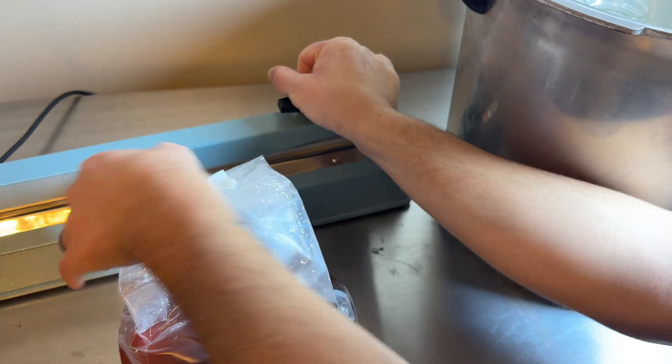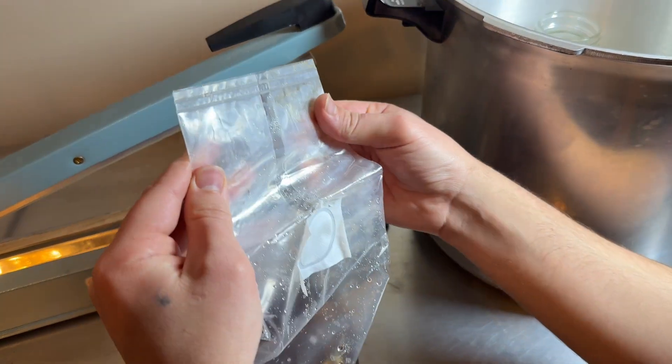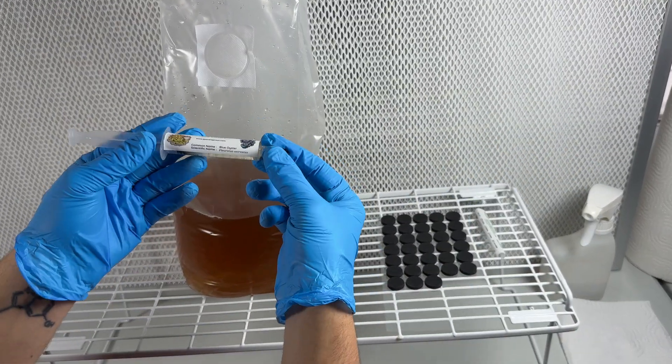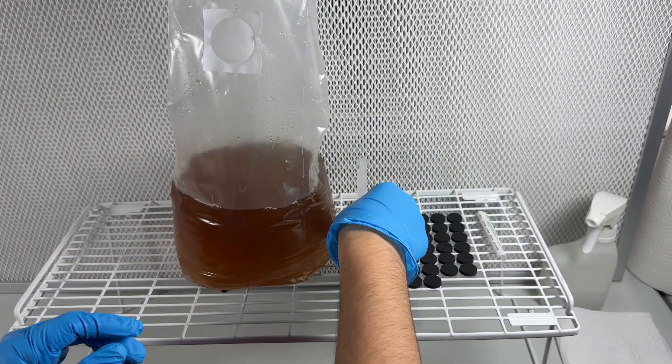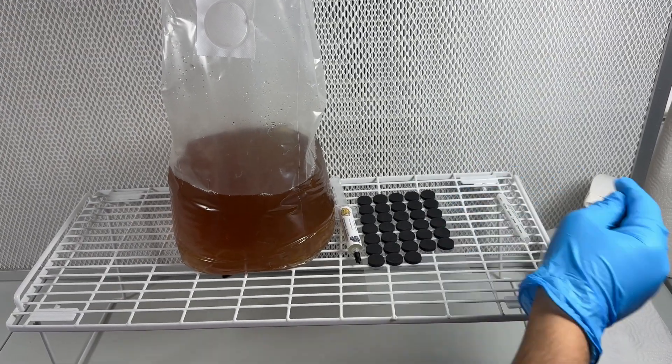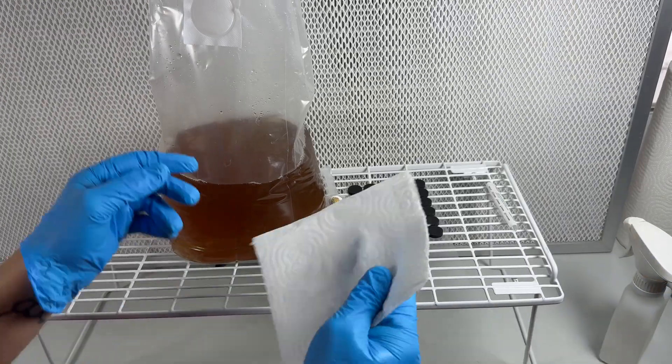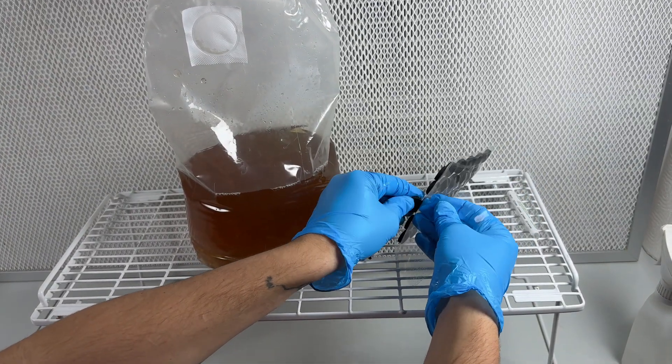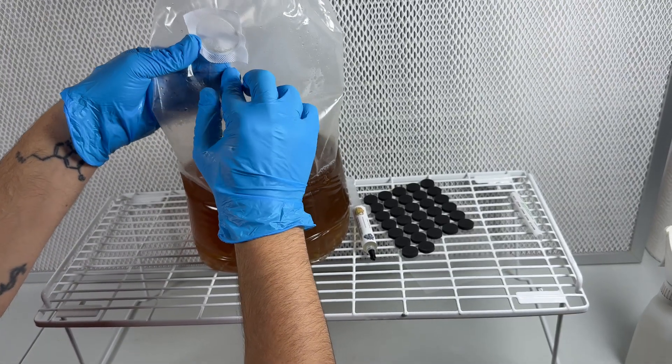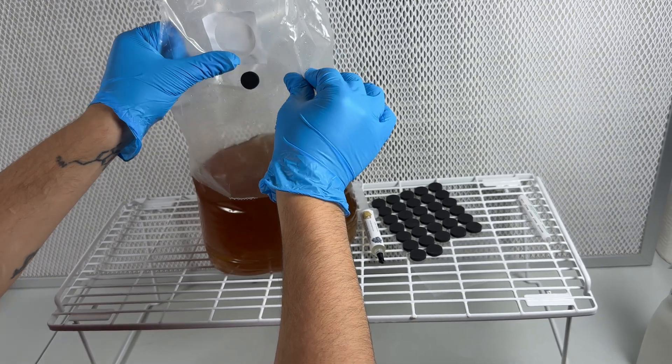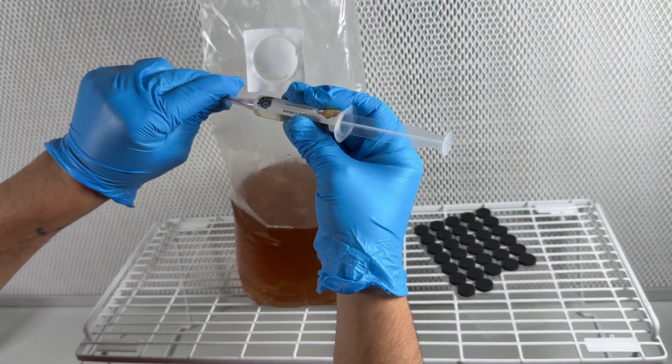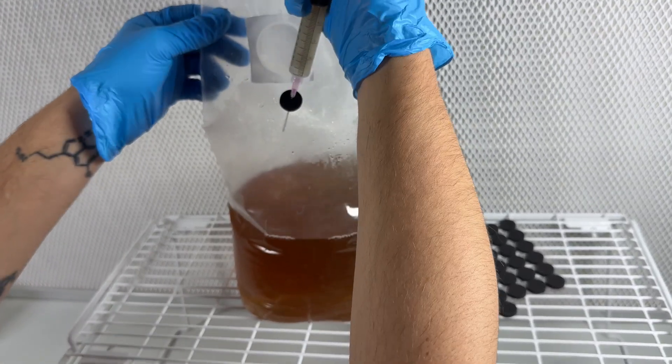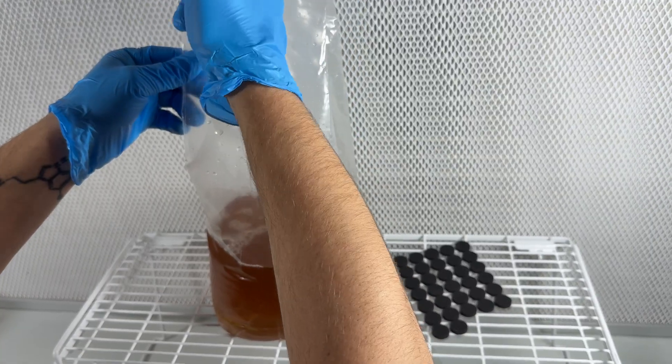Now that the bioreactor bag is pressure sterilized and sealed, it's time to inoculate it with mushroom liquid culture. I wipe the bag down with isopropyl alcohol and then I attach one of these sticky injection ports onto the bag. I inoculate the bag with the whole syringe just for the sake of time. You could get away with two milliliters and it'll just take longer to grow.